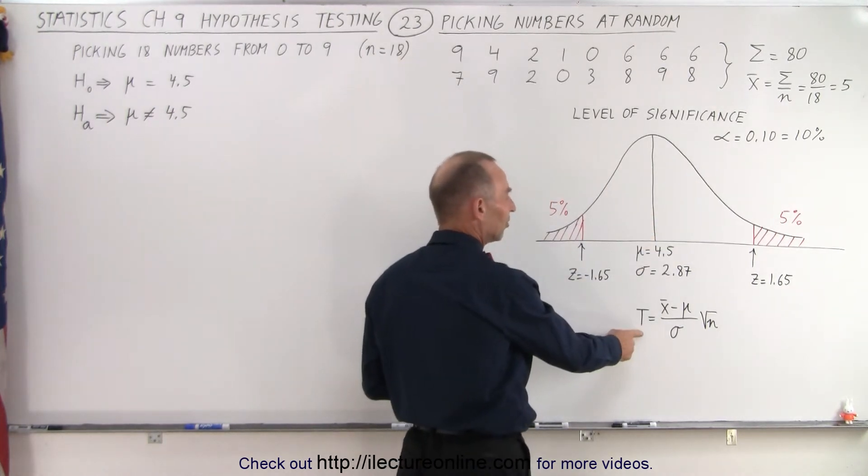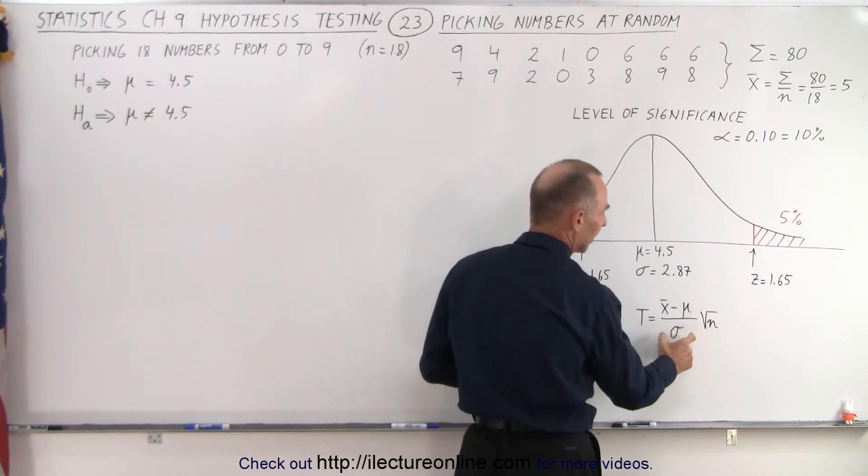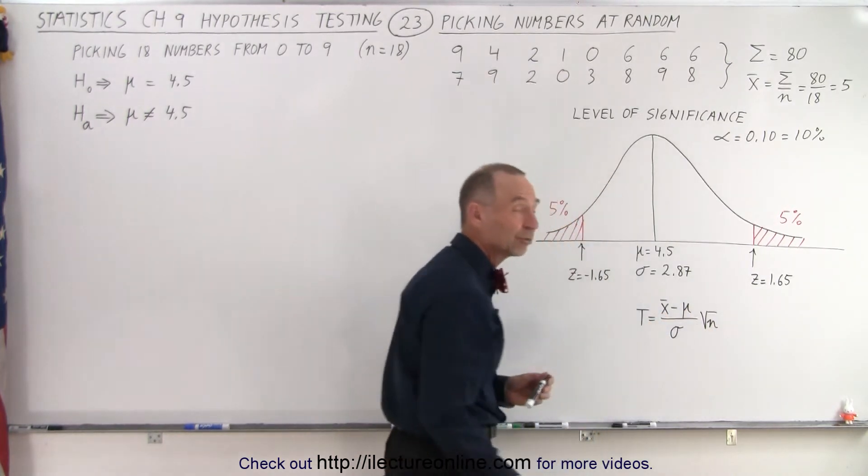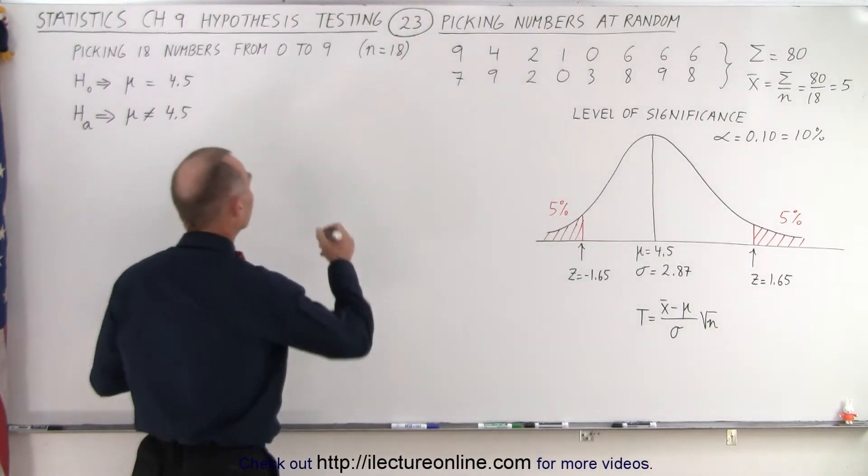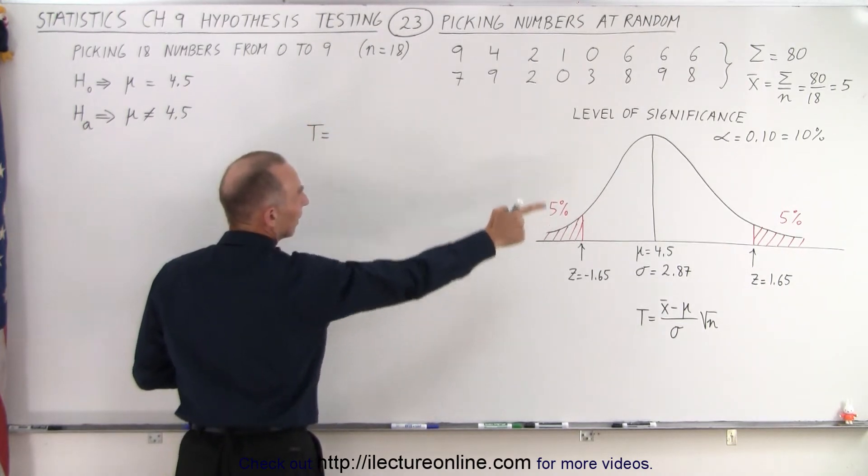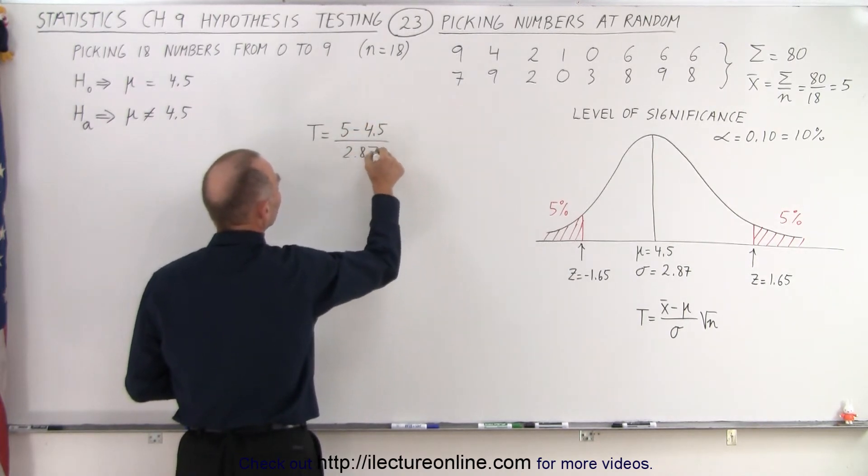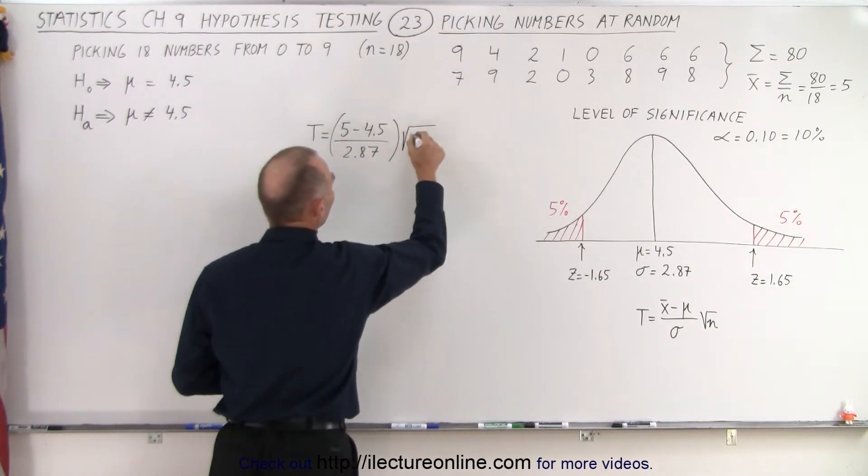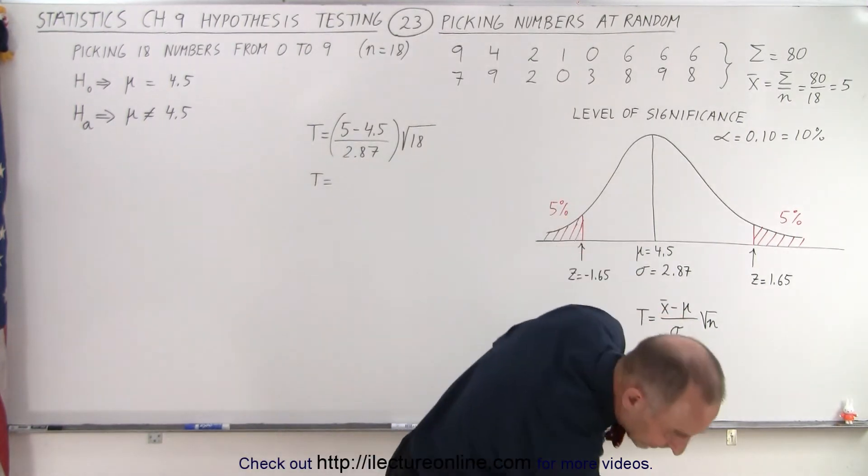We can calculate the test-statistic, which is the difference between the sample mean and the population mean, divided by the standard deviation, and multiply times the square root of the sample size. So let's calculate the test-statistic and see what we get. So T is equal to, the average that we got was 5, minus 4.5 for the mean of the population, divided by 2.87, and then we're going to multiply that by the square root of the sample size, which is 18. So let's see how big our test-statistic is.